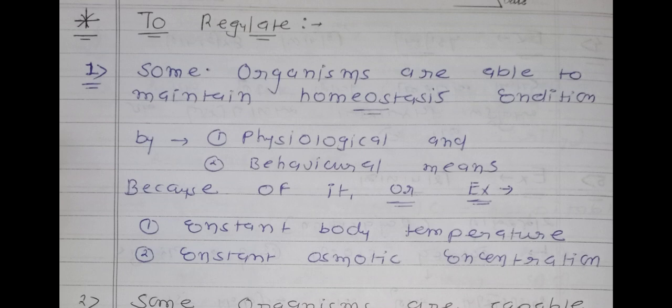An important MCQ point: not all organisms are able to maintain homeostasis condition — underline the word homeostasis. This condition is maintained with the help of physiological and behavioral changes. Two examples are constant body temperature and constant osmotic concentration, both of which indicate the homeostasis condition of a particular organism.